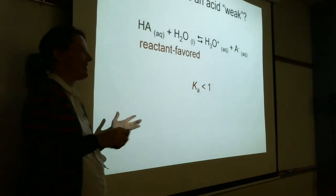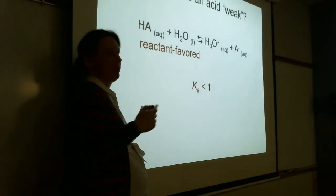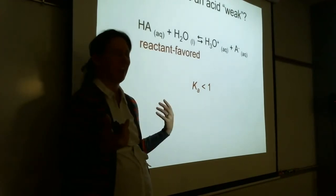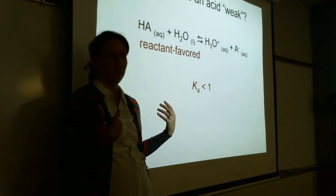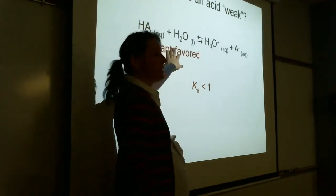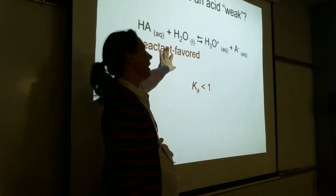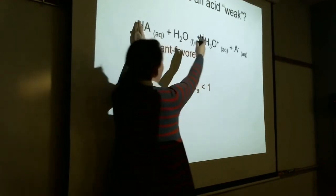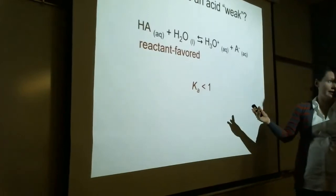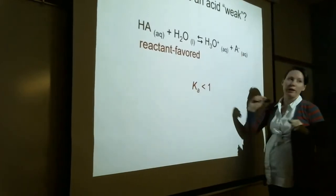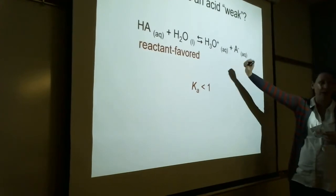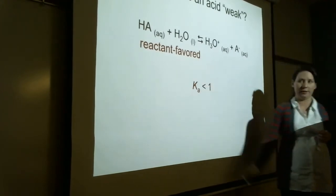So what makes an acid weak? What makes an acid weak is the extent that it dissociates. A weak acid is reactant favored — equilibrium lies over here. Ka is less than 1. Strong acids are product favored; Ka is greater than 1. So we don't make an ICE table for strong acids, but we do make an ICE table for weak acids.